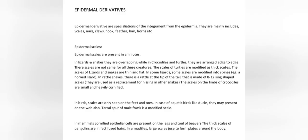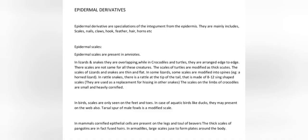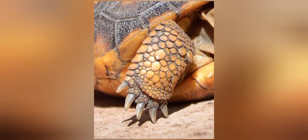Epidermal derivatives are specializations of the integument from the epidermis. They mainly include scales, nails, claws, hook, feather, hair, horns etc. Epidermal scales are present in amniotes. In lizards and snakes they are overlapping, while in crocodiles and turtles they are arranged edge to edge.